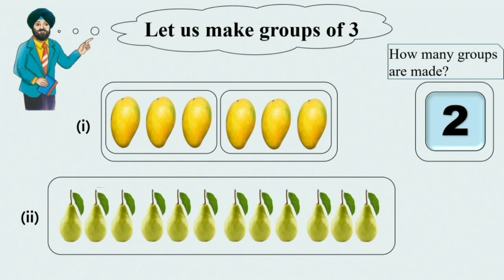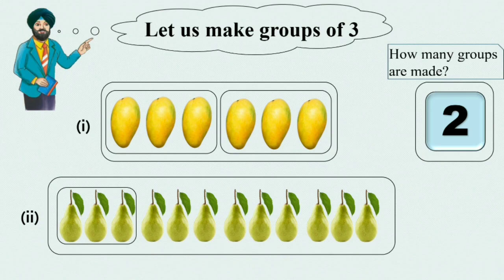Here we have 12 pears. We will make groups of 3 again. 1 group of 3 pears is here. 1st group. Some more pears are left. Now we will make another group of 3 pears and here is the second group of 3 pears.